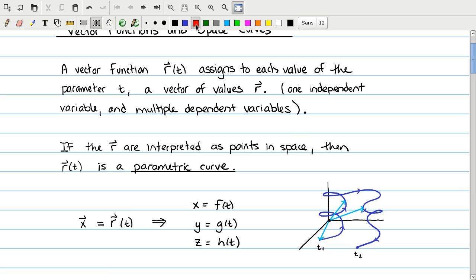So here we have an example of a parametric curve, just a small sketch. For some time t1, we have a vector pointing from the origin to this point r1 in space. And then as time evolves, the vector evolves, it points somewhere new in space, and at a later time it points somewhere new in space, and it gradually traces out this curve through space that I have just sketched here, and ends at some point t2.